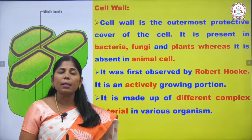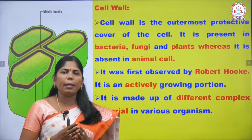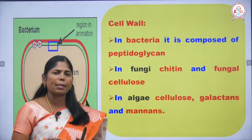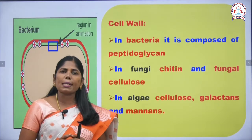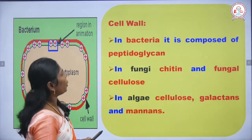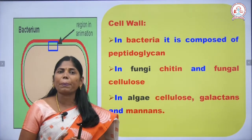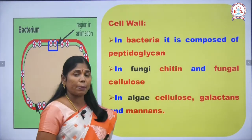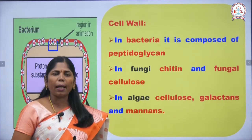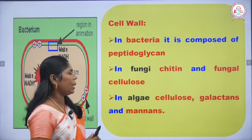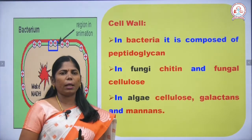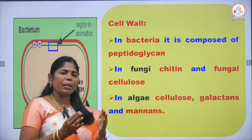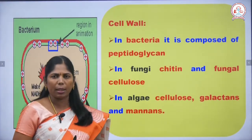For example, in plants the cell wall contains cellulose, hemicellulose, pectin, lignin, and suberin. In bacteria, the cell wall is composed of peptidoglycan, also called mucopeptides. In fungi, the cell wall is made up of chitin and fungal cellulose. In algae, the cell wall contains cellulose, galactans, and manans. Each organism has different cell wall materials.